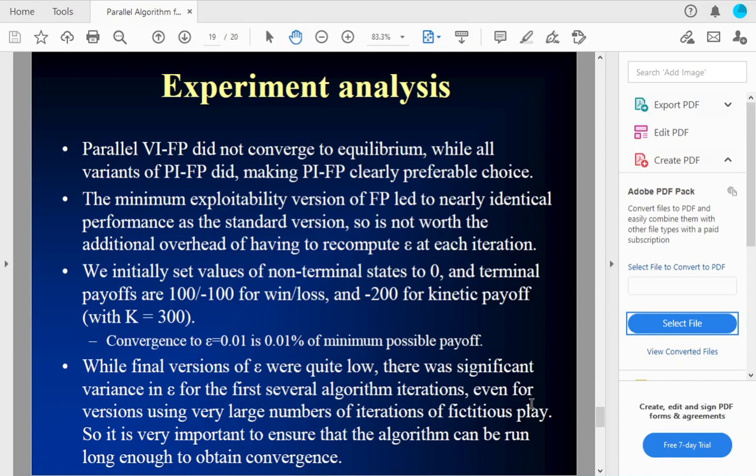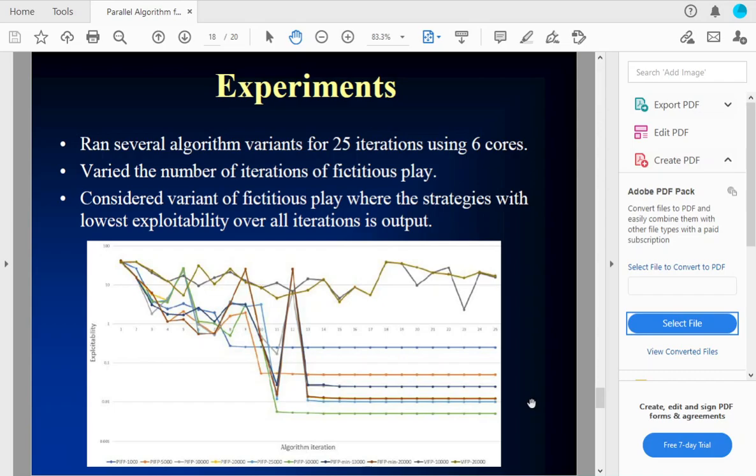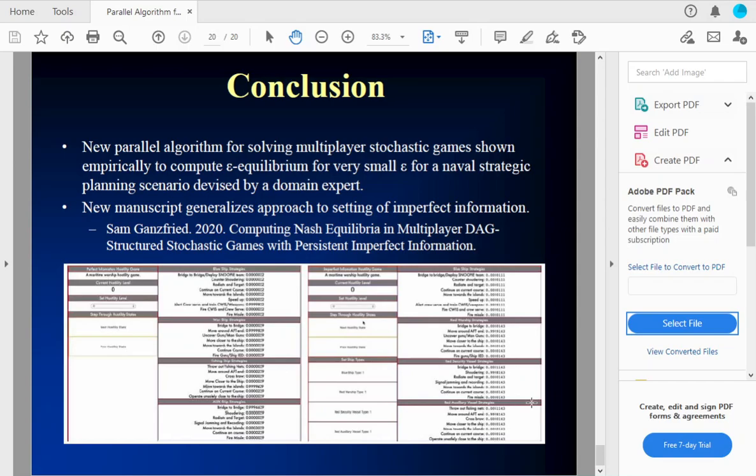We note, getting epsilon equals 0.01 is quite small. It's 0.01% of the minimum possible payoff. We also observed though, even though the final versions were of epsilon were quite low, there was significant variance in the first several algorithm iterations. Even if we used a lot of iterations of fictitious play, you can see here that you really spiked up a lot in the first few steps. And so, it's important to run the algorithm long enough to get convergence.